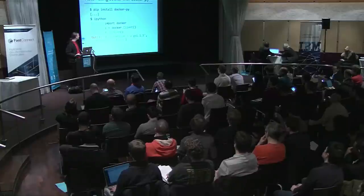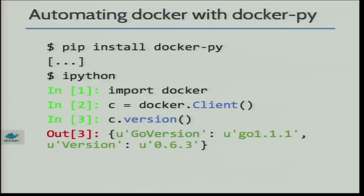I want to quickly get into Docker PY, which is our Python client. It's basically API bindings written in Python. Here I'm installing Docker PY and launching IPython, an interactive Python shell. I import the package, which is Docker, create the client, and then call the version function, which gives me the version and confirms I'm connected to the Docker daemon.